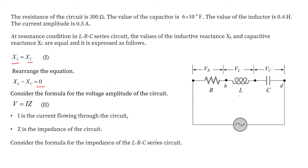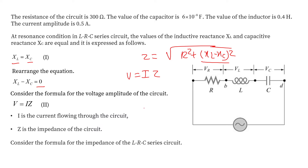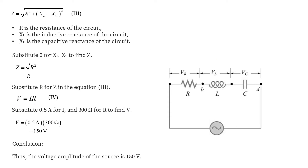The formula for the voltage amplitude in an LRC circuit is V = I·Z, where Z = √(R² + (XL − XC)²). Since XL − XC = 0, the total impedance equals R, so V = I·R. Multiplying 0.5 A by 300 Ω gives 150 V. The voltage amplitude of the source is 150 V, which is also equal to the voltage across the resistor since the full current of 0.5 A passes through it.